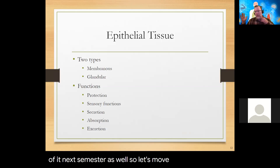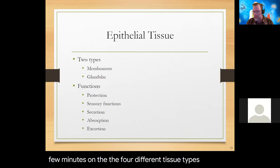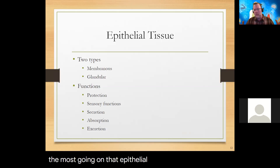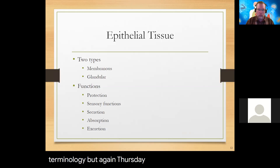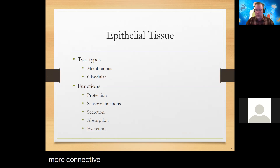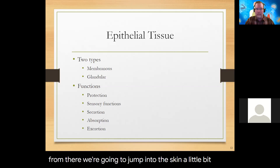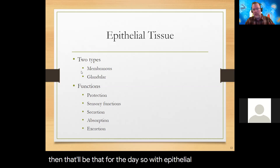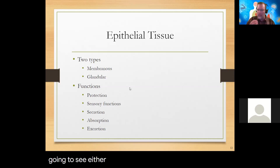Let's spend a few minutes on the four different tissue types, starting with epithelial tissue. It is the bulkiest — it has the most going on. There will be some new terminology, and Thursday we'll work through it more. Then we'll move to connective tissue, then muscle and nerve. From there, we'll jump into the skin.